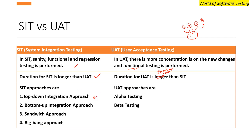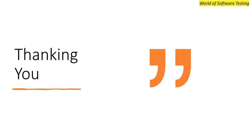SIT approaches include the top-down integration approach, bottom-up integration approach, sandwich approach, and big bang approach. UAT approaches are alpha testing and beta testing. These SIT approaches have been covered in previous lectures, so you can watch those for more detail.